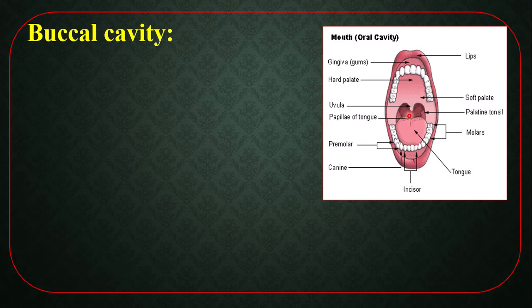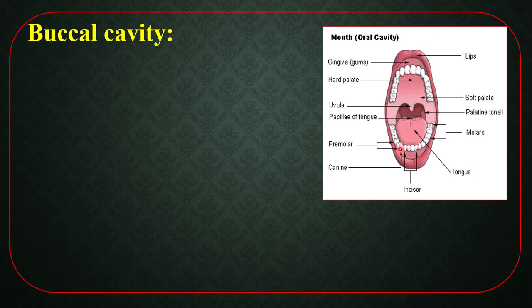The number of permanent teeth is 32, having 16 in each jaw. Teeth are of four types. The first is incisor — these are incisors that cut food particles into small pieces. Then canine — these are canines, which help to cut and tear hard parts like meat.